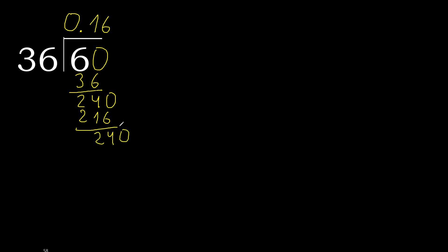Complete with 0. The point is here. 36 multiplied by 6 is not greater. Subtract. Complete.